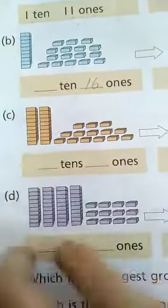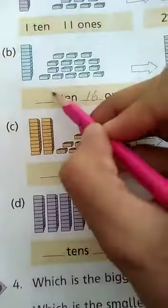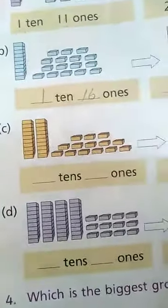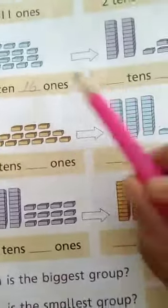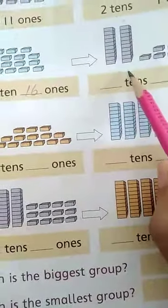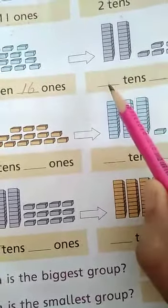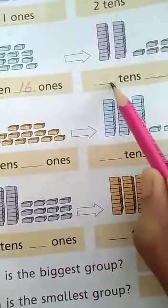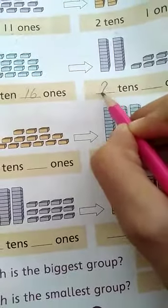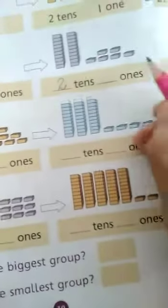Now we move on to question number B. On question number B, Adil has 1 ten and 16 ones. So he takes 10 ones and puts them in the tens column. When he puts in tens column,